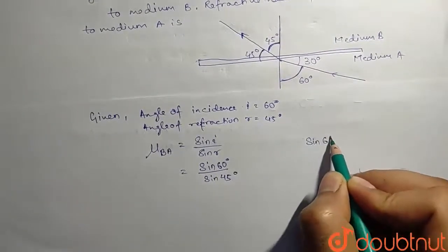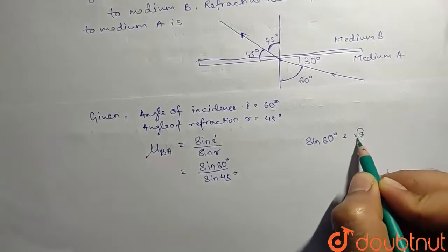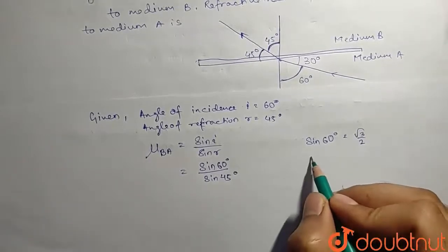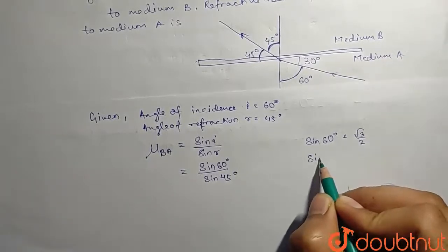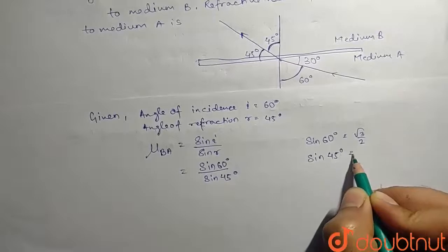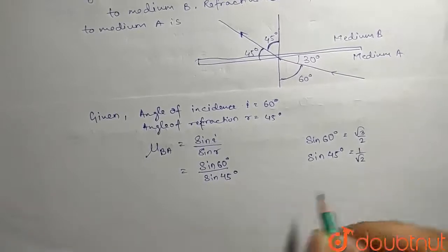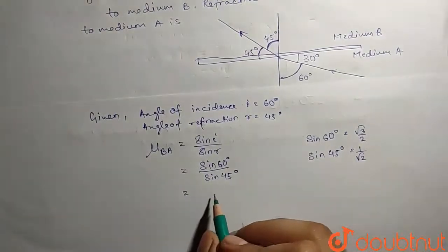We know that sin 60 degrees equals root 3 by 2, and sin 45 degrees is 1 by root 2. So we'll put the values.